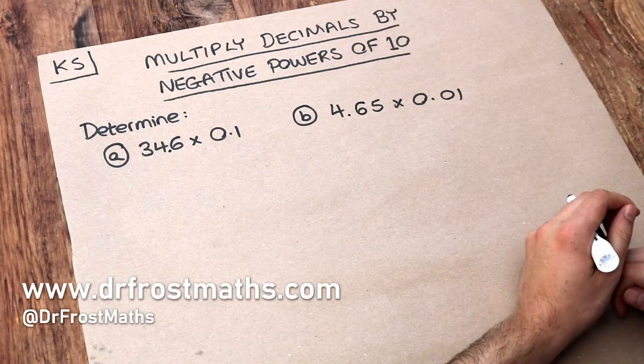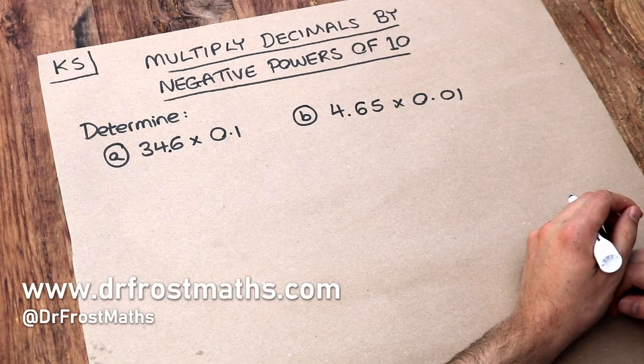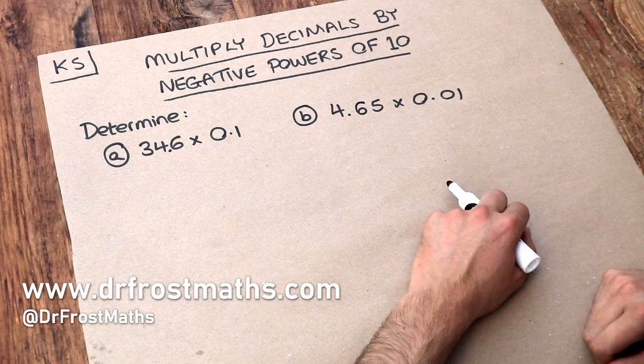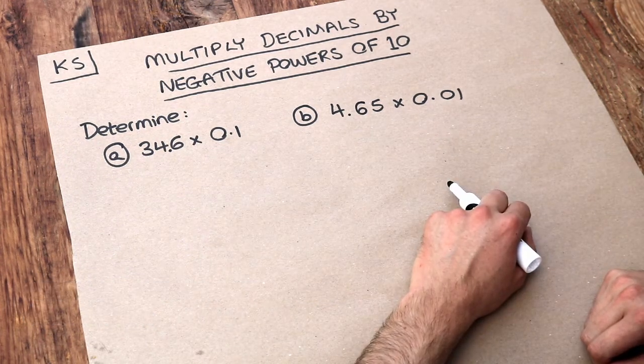Hello and welcome to this Dr. Frost Maths key skill video on multiplying decimals by negative powers of 10. So this first question here we want to do 34.6 multiplied by 0.1.